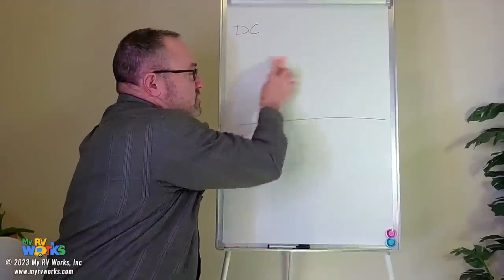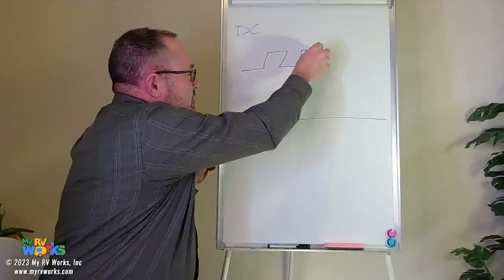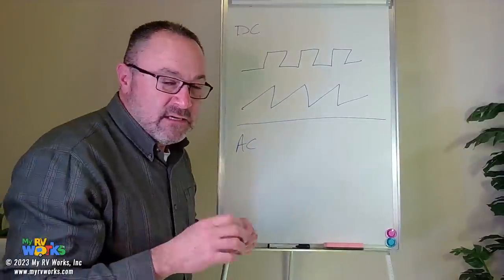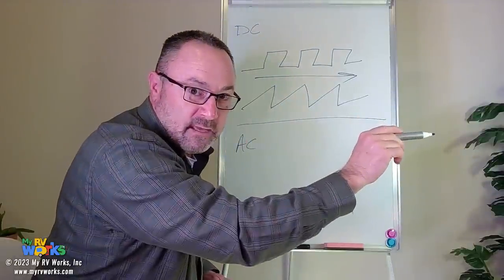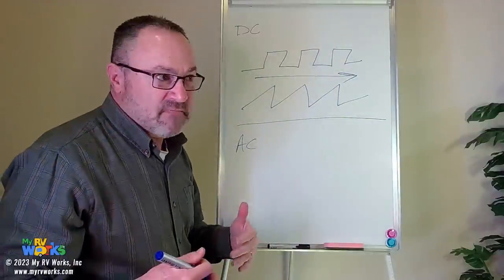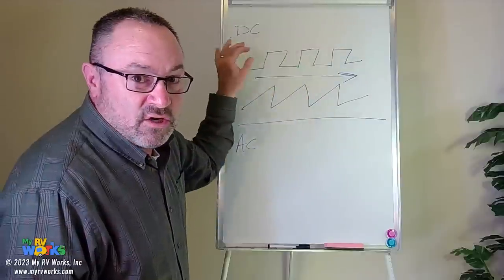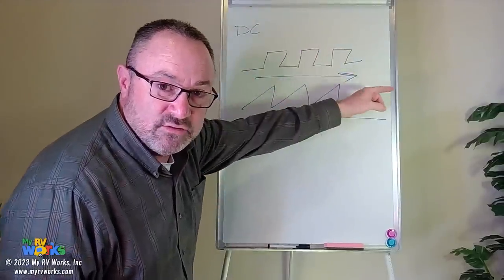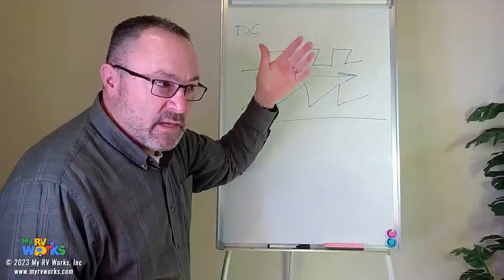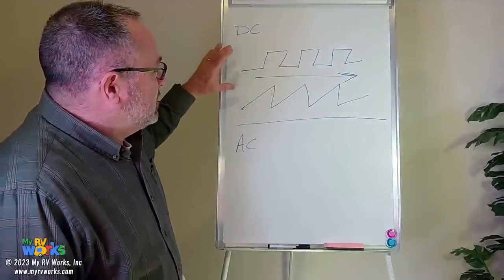DC can have different wave patterns — sawtooth and others — but the point is they're all going in one direction. Think of diodes, which are like a check valve in water — they only allow current to go in one direction. Think of DC current like skydiving: it's only going one direction, directly from point A to point B to the source of power where work is done.